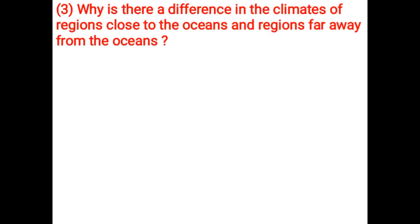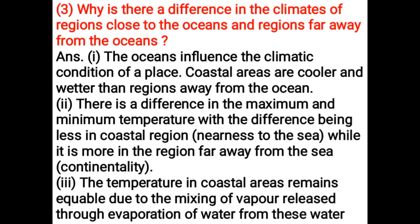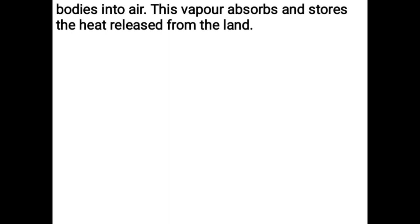Why is there a difference in the climates of regions close to the oceans and regions far away from the oceans? The oceans influence the climatic conditions of a place. Coastal areas are cooler and wetter than regions away from the ocean. There is a difference in the maximum and minimum temperature, with the difference being less in coastal regions near the sea, while it is more in regions far away from the sea. The temperature in coastal areas remains equable due to the mixing of vapour released through evaporation of water from these water bodies into the air. This vapour absorbs and stores the heat released from the land.